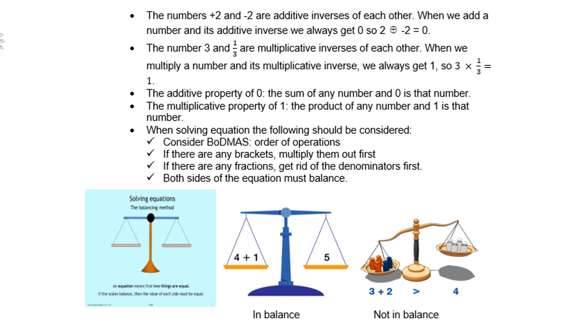The additive property of 0: the sum of any number and 0 is that number. The multiplicative property of 1: the product of any number and 1 is that number. When solving equations, the following should be considered. You must consider BODMAS, order of operations.